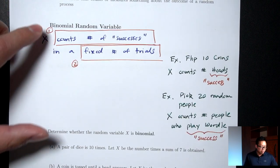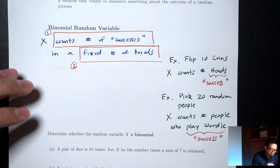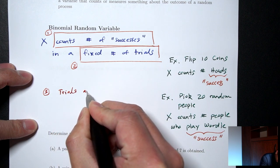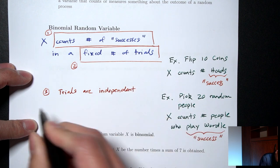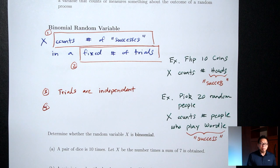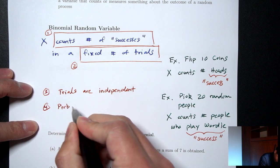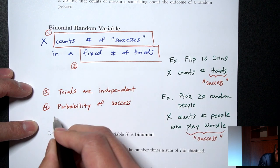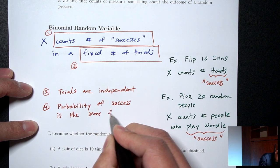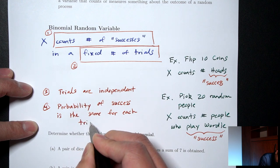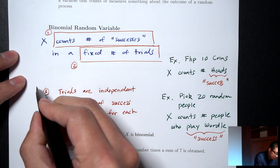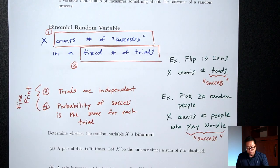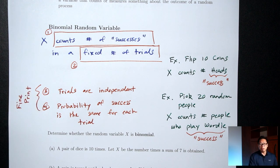There are two other requirements to being a binomial random variable. The third requirement is that the trials need to be independent. The fourth requirement is that the probability of success needs to be the same for each trial. I'm going to call these two requirements the fine print, because for the situations we'll be dealing with in statistics, these two requirements are going to be met for free.